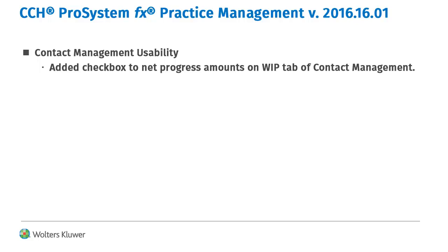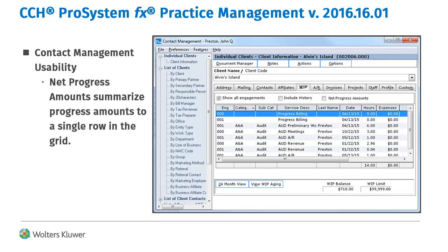The WIP tab in Contact Management displays time and expense entries. There is now a new option to make it easier to focus on these transactions. Users can select the Net Progress Amounts checkbox so that progress transactions are summed by engagement, allowing you to focus on time and expenses.